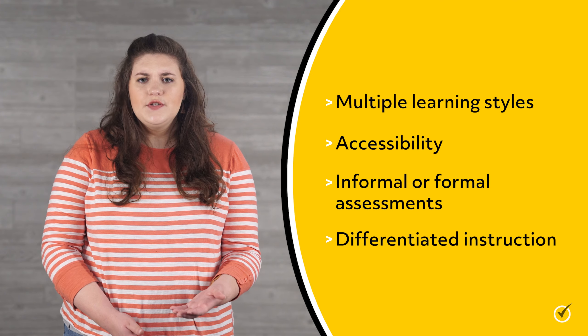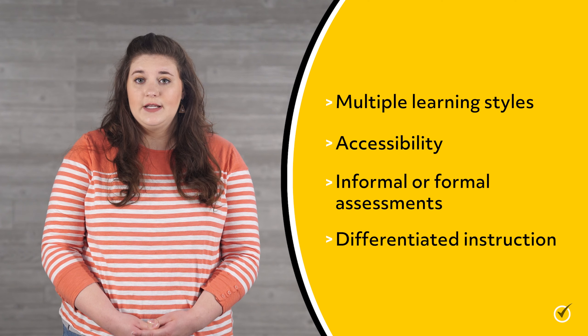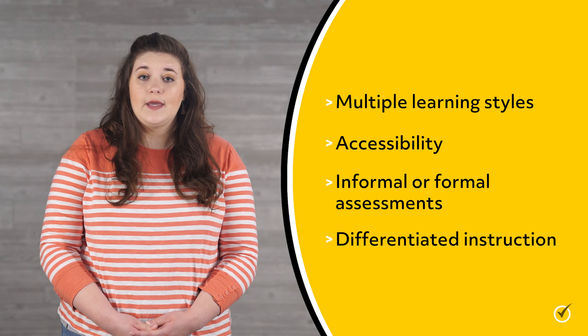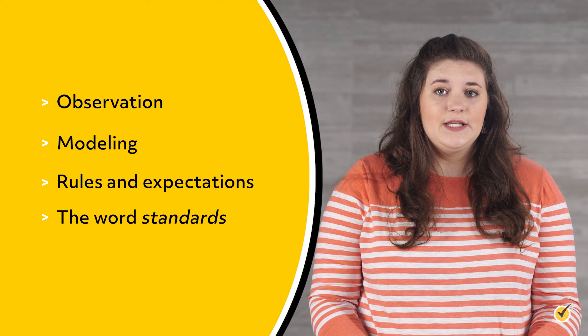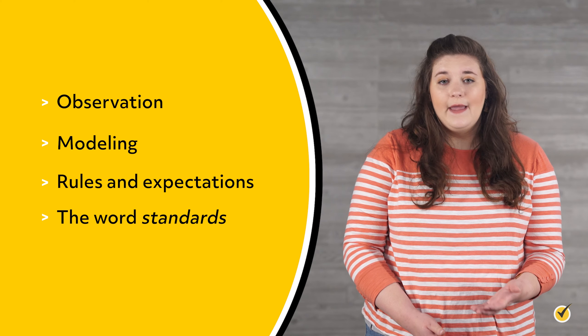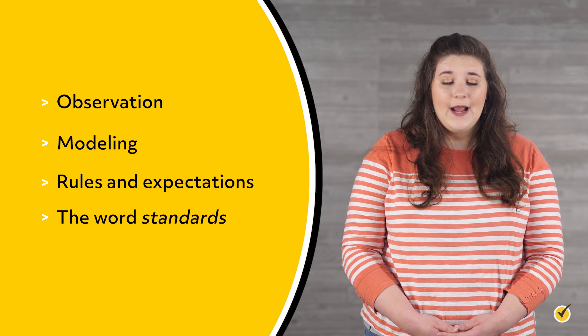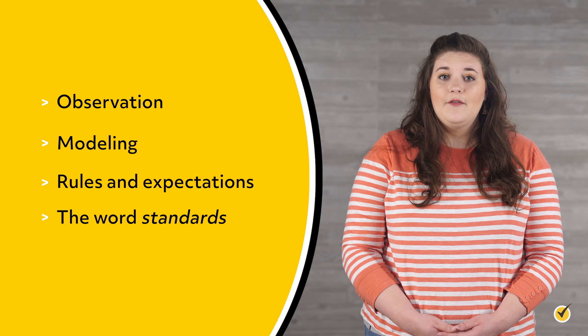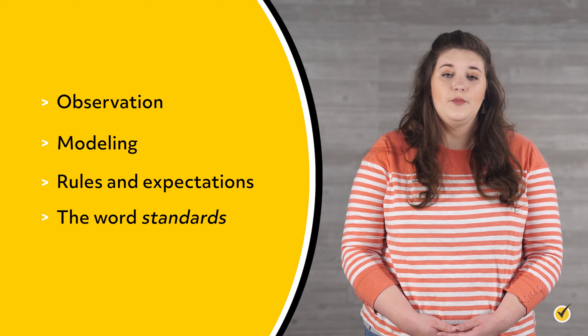Your study guides and practice tests will have many keywords to think through, and these will be the words you will find time and time again. In addition to the ones we just went over — multiple learning styles, accessibility, informal or formal assessments, and differentiated instruction — there are additional examples that you should look out for. These are words related to observation, modeling, rules and expectations, and most importantly, the word standards. If you see these words in one of the answer options, it is more than likely the correct answer. This is because the exam is looking for you to recognize and identify best practices. If implemented, these keywords have a positive impact on academic results and provide educators with plans of action that have been previously implemented.